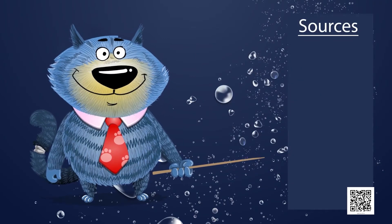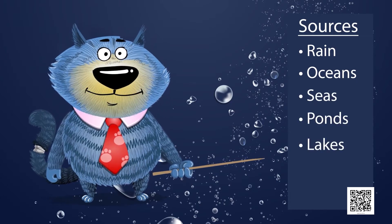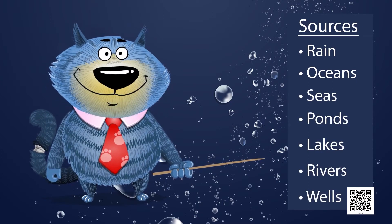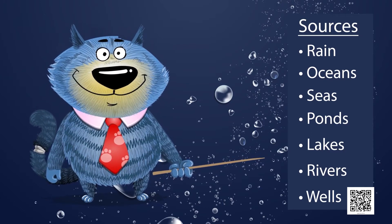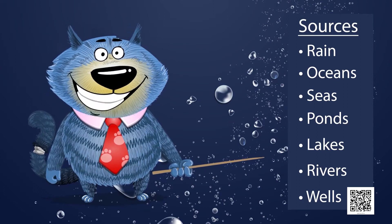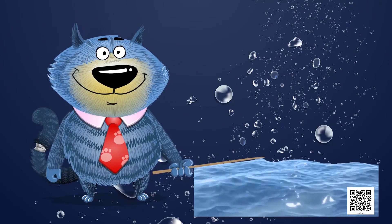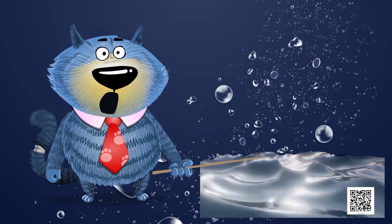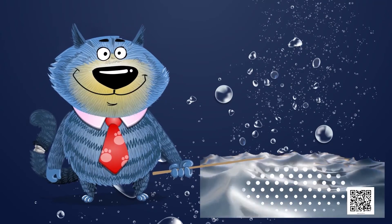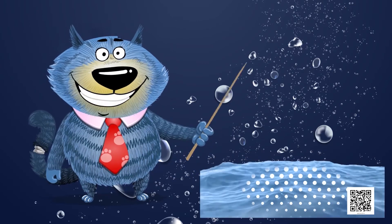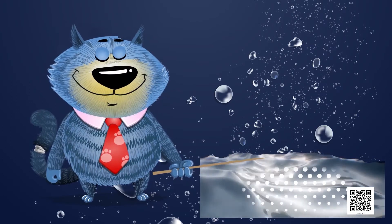Sources of water: rain, oceans, seas, ponds, lakes, rivers and wells are some sources of water. Do you know that about two-thirds of the earth is covered with water? Most of this water is in oceans and seas. The water in the oceans and seas has many salts dissolved in it — the water is saline — so it is not fit for drinking and other domestic, agricultural and industrial needs.